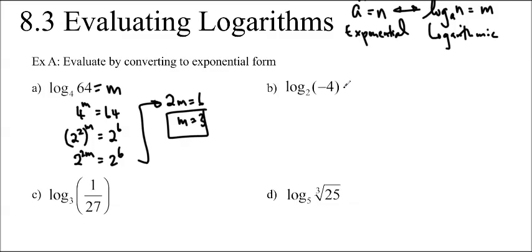Log base 2 of negative 4. Let's let that be n. So 2 to the n is equal to negative 4. And we know that a positive number times itself, no matter how many times, will never be a negative number. So we know there's no solution because it can't be negative.